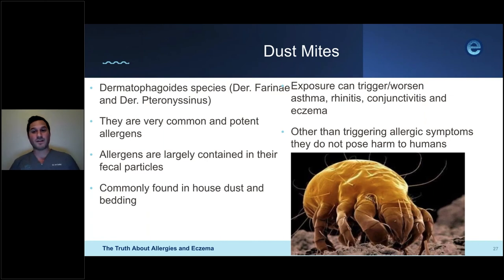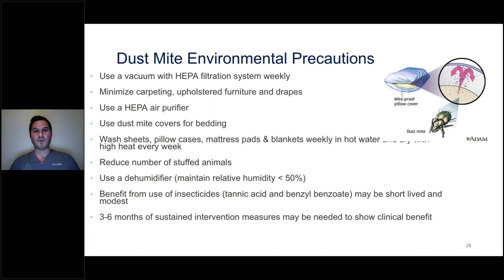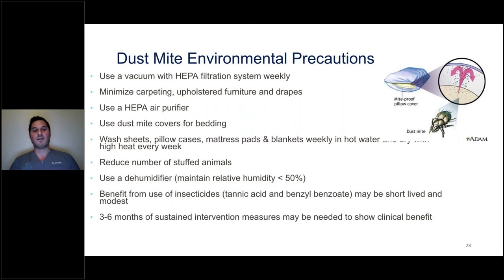Environmental precautions to decrease dust mite burden include: using a vacuum with HEPA filtration weekly, minimizing carpeting, upholstered furniture, and drapes, using a HEPA air purifier, dust mite covers for bedding, washing sheets and pillowcases in very hot water weekly, reducing stuffed animals, and using a dehumidifier to keep relative humidity below 50% — since dust mites thrive in humidity. Insecticides such as tannic acid and benzyl benzoate provide modest short-lived benefit. Several months of sustained intervention are needed to show clinical benefit.